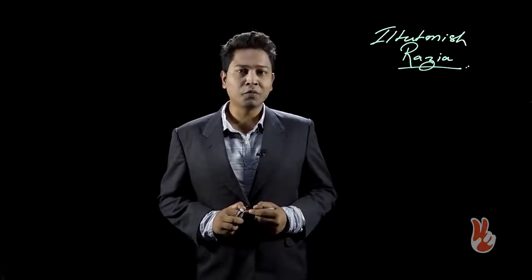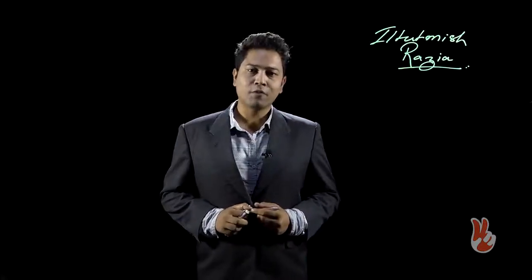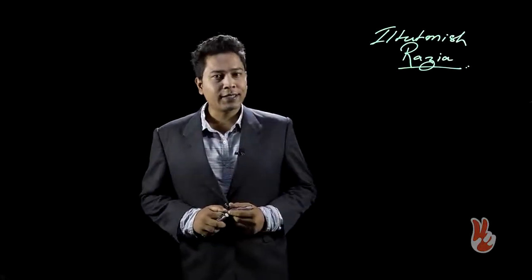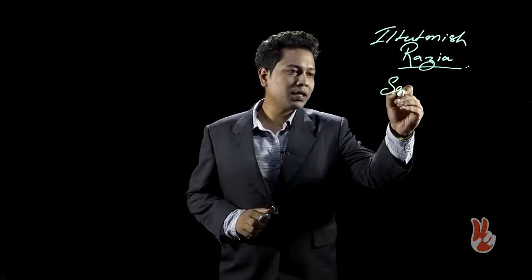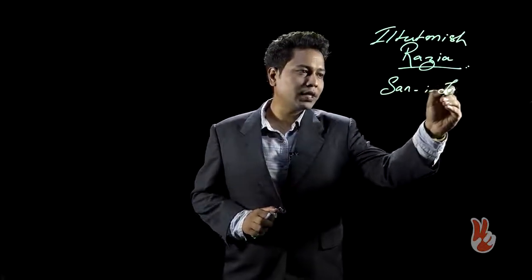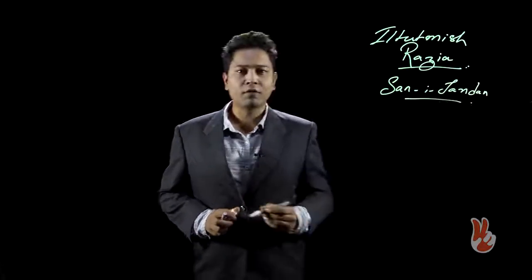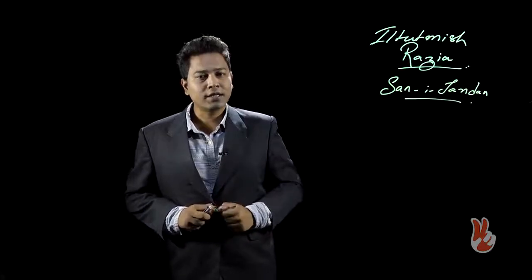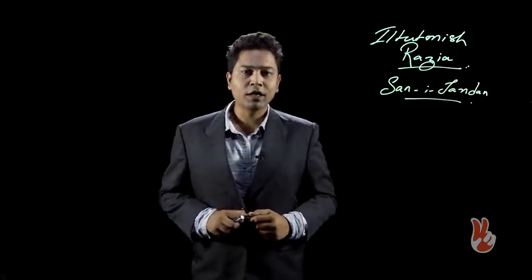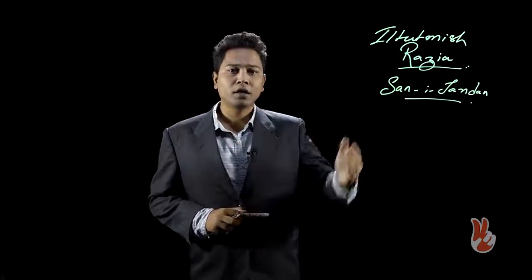Let us talk about Iltutmish first and then we shall talk about Razia, his progeny. As far as Iltutmish is concerned, Iltutmish was the Sar-e-Jandar of Qutubuddin Aibag. Sar-e-Jandar means the head of the imperial security for the Sultan, the head of the imperial bodyguards for the Sultan.